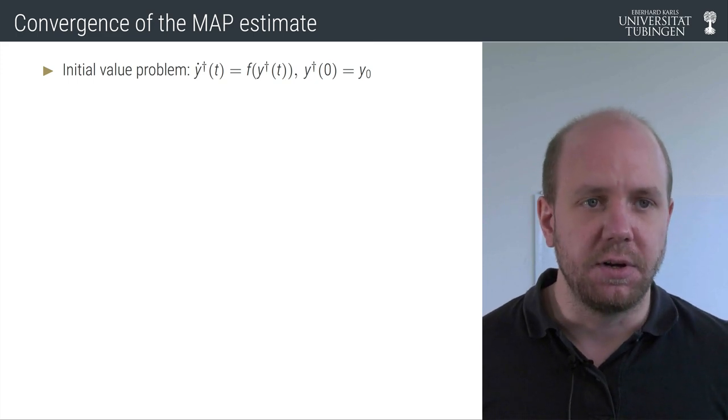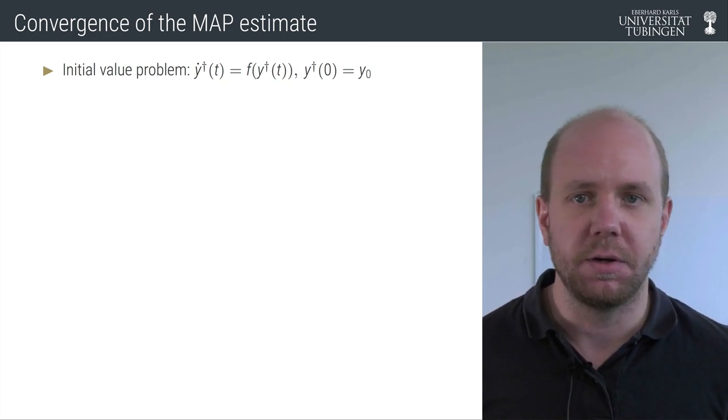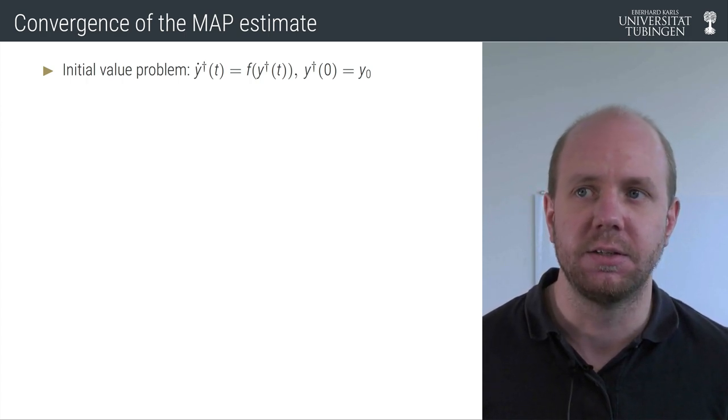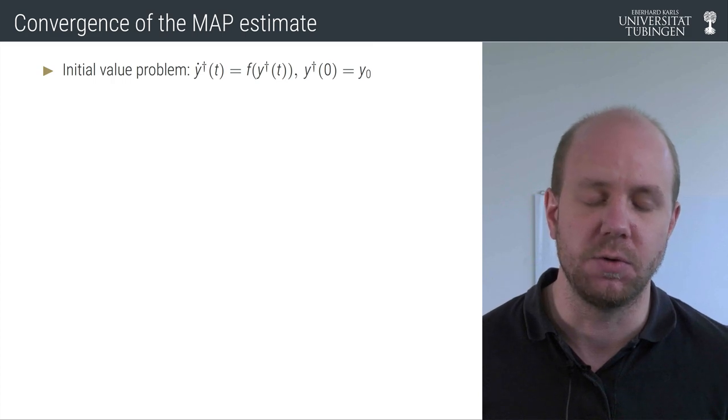As per usual, we have an initial value problem and an unknown function y dagger whose derivative is equal to f of y dagger, and then you have some initial value y naught.